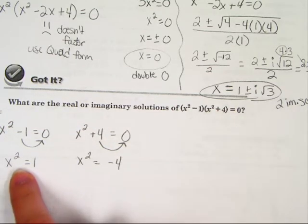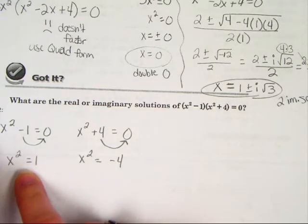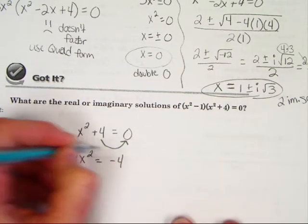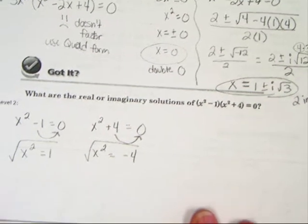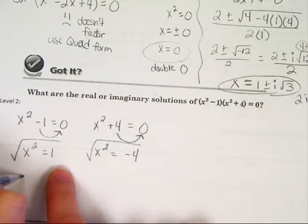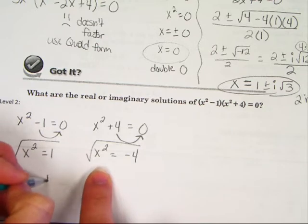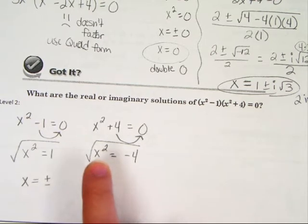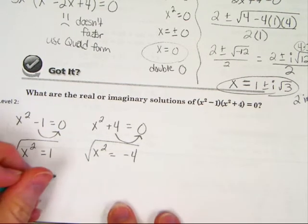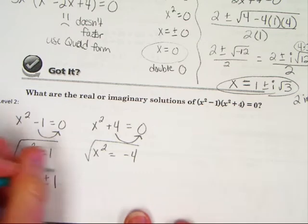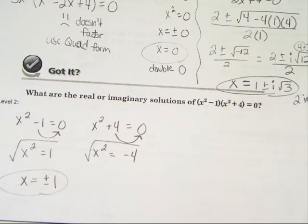Now, to solve for x, I have to undo the square. So I'm going to take the square root, and that's the same for both of these. We know the square root of x² is x. And since we're taking an even root, we have to use plus and minus. And then the square root of 1 is 1. So we have two solutions here, a plus and a minus 1.